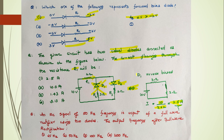Keep in mind: in an ideal situation, a reverse biased diode offers infinite resistance. Another important concept: an AC signal of 50 Hz is input to a full-wave rectifier using two diodes. The output frequency after full-wave rectification is 100 Hz.